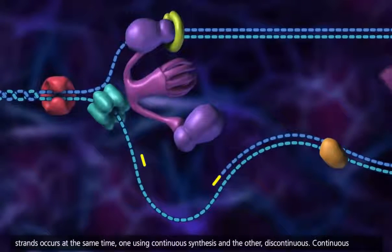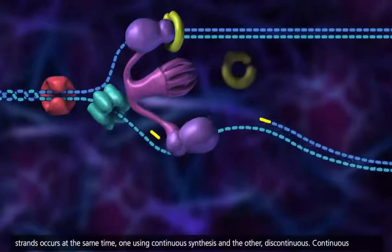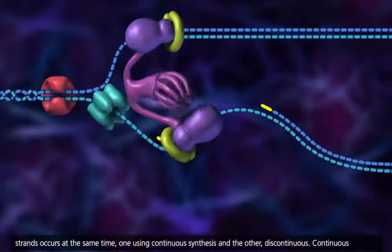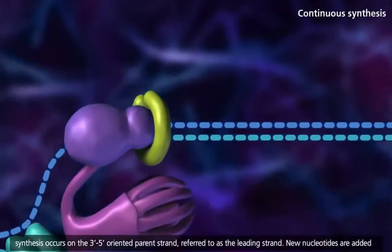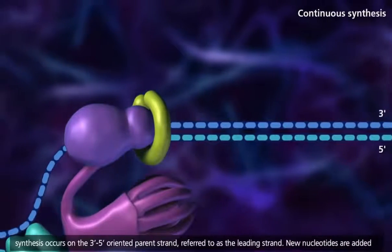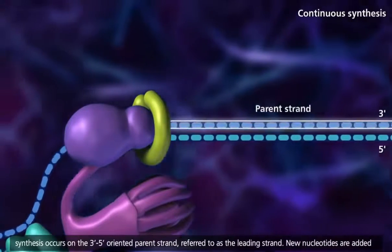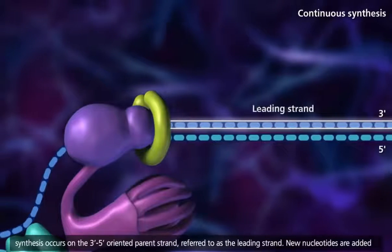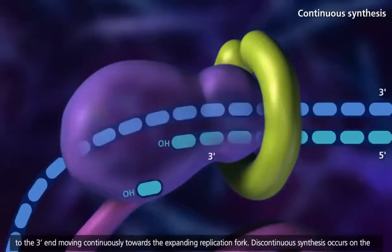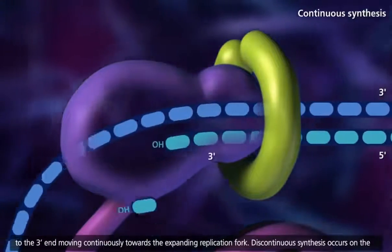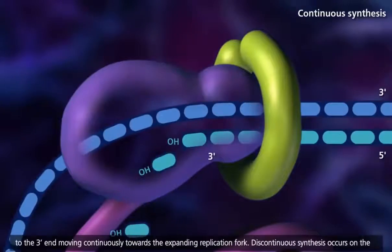Replication of both strands occurs at the same time, one using continuous synthesis and the other discontinuous. Continuous synthesis occurs on the 3' to 5' oriented parent strand, referred to as the leading strand. New nucleotides are added to the 3' end, moving continuously toward the expanding replication fork.